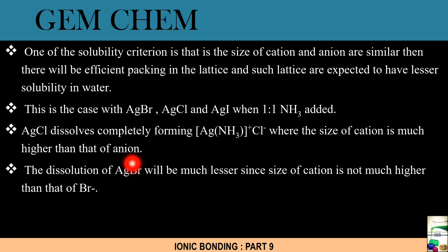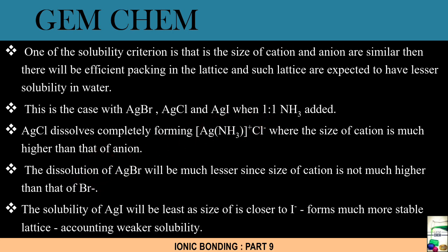In the next case we have AgBr where there is much lesser dissolving because the size of cation is not much higher than that of Br⁻. That is this one is more or less comparable. And the last one is solubility is the least because the I⁻ and this cation have nearly same size accounting for weaker solubility. So this fact is very much important to understand.